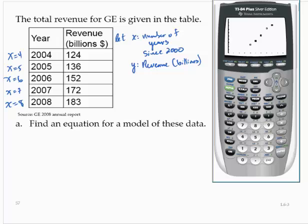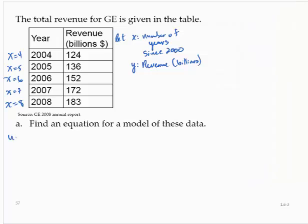And what I'll do is I think I'll use the first point and the last point. And it looks like a line through those points would be pretty representative of the data. So I will use the first and last point. So that would be 4, 124, and 8, 183.